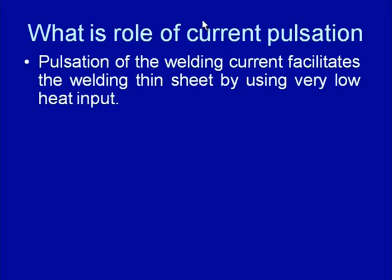The pulsation of the welding current facilitates the welding of thin sheets using very low heat input. High heat is generated only for a short duration and then weld pool solidification is facilitated during the base current period. If the cycle of peak current and base current continues, using very low heat input we can successfully weld thin sheets without melt-through problems.